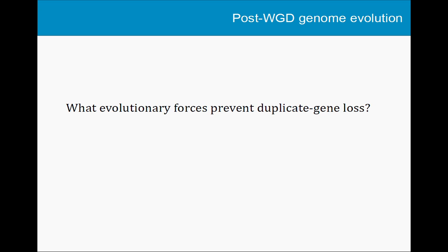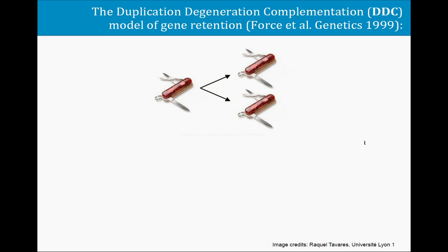The question I'm really interested in is to understand what are the evolutionary forces responsible for preserving duplicated genes — why some duplicated genes are retained for millions of years, while others have been lost immediately after the genome duplication in paramecium. And maybe we can also learn from paramecium about genome duplication in other species. To illustrate the different models on how duplicated genes can be retained, I'm going to use my favorite model gene, the Swiss Army knife gene, that contains two functions: the scissors function and the knife function.